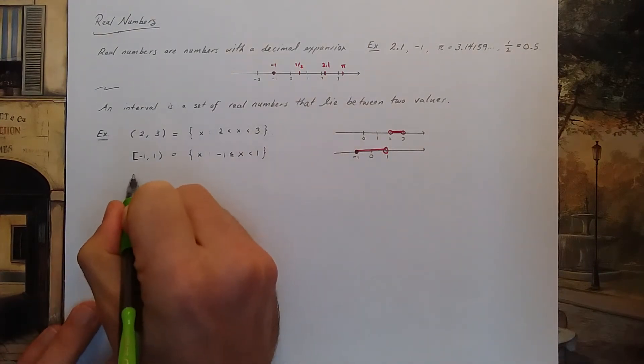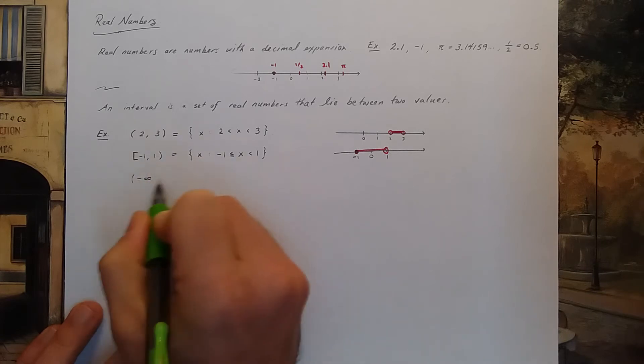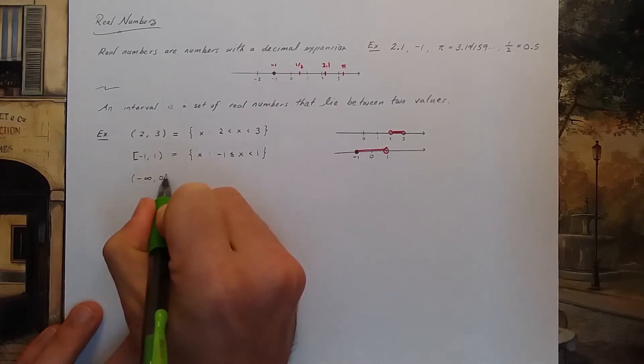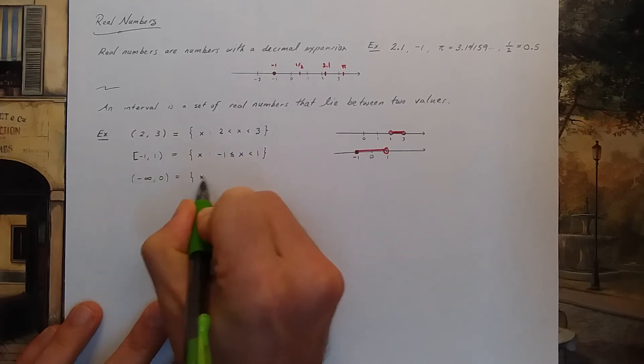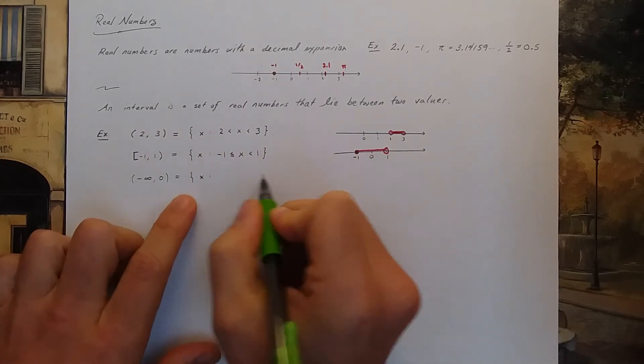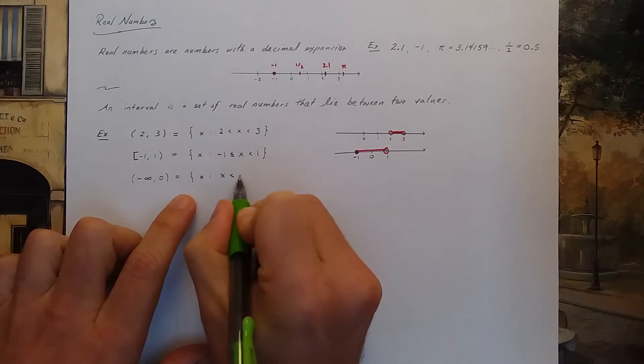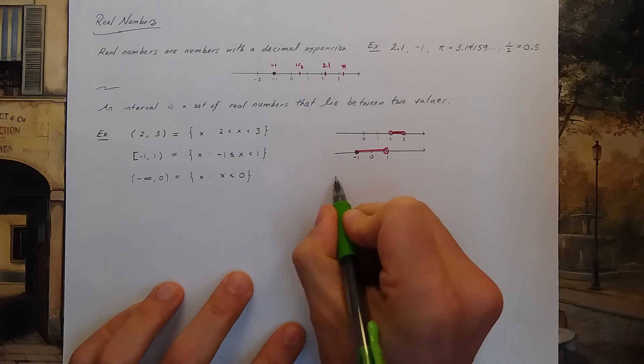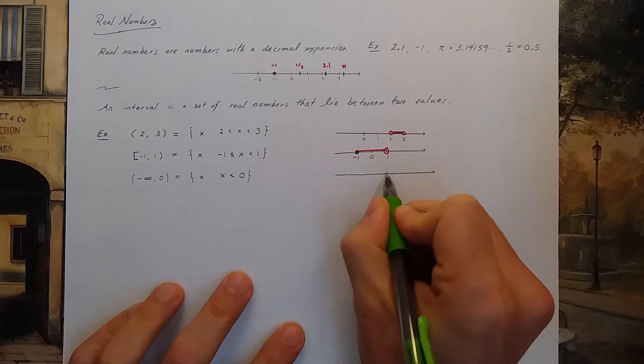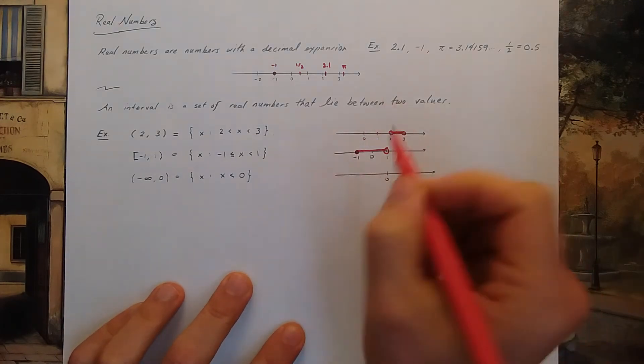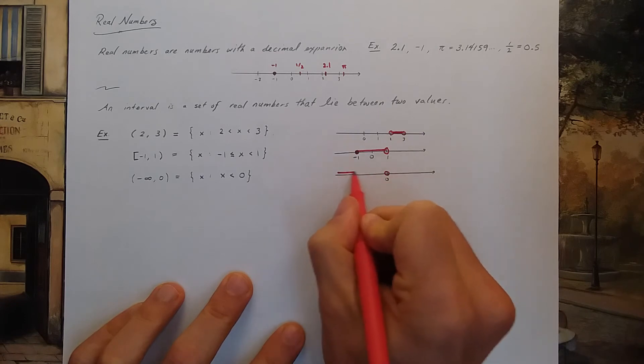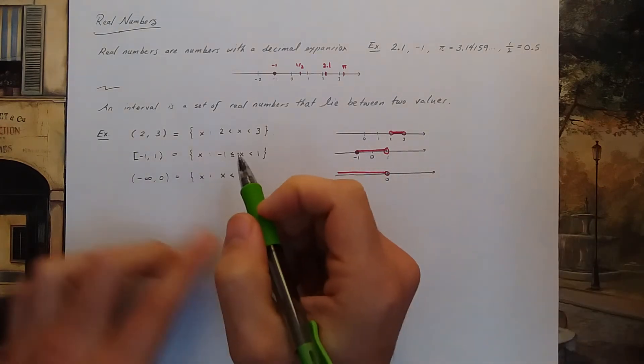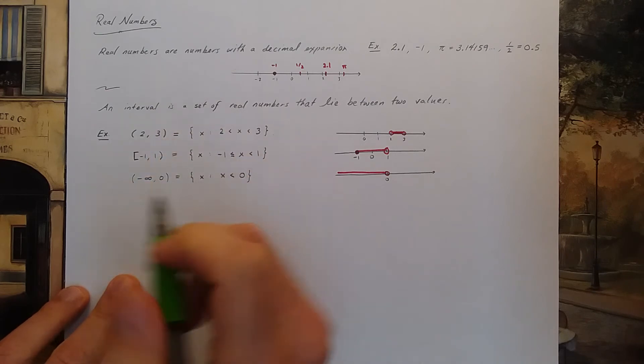You could even have an infinity symbol in one of the end points of the interval. I could have negative infinity to 0. This would be all x values such that x is less than 0. On the number line, it would look like this. So those are intervals of real numbers.